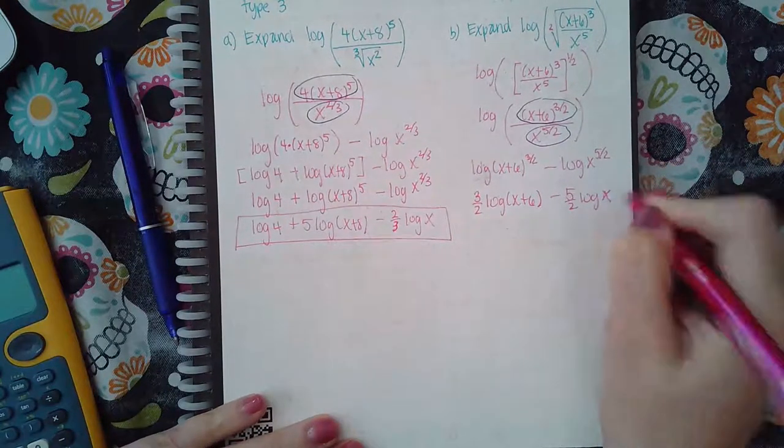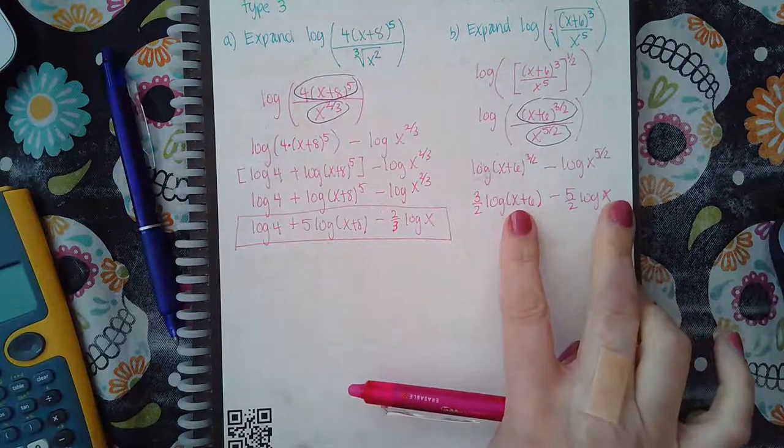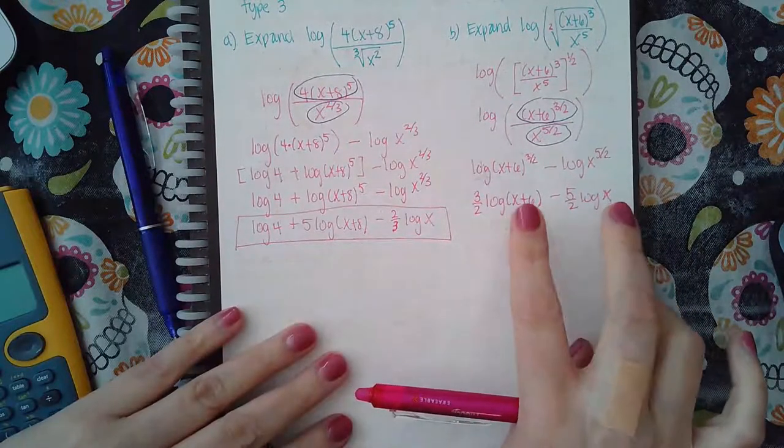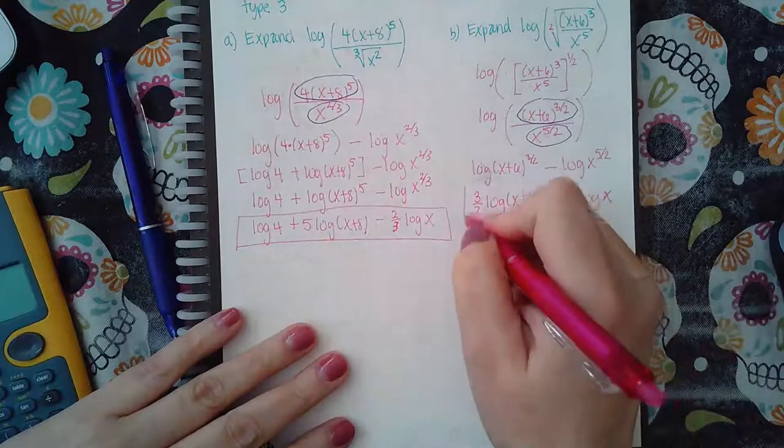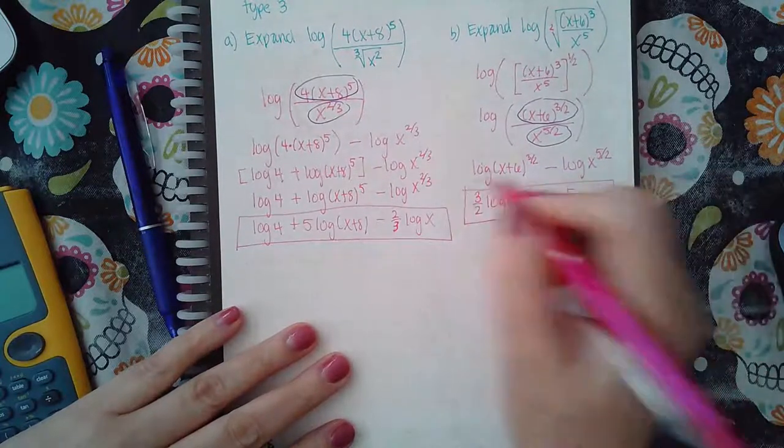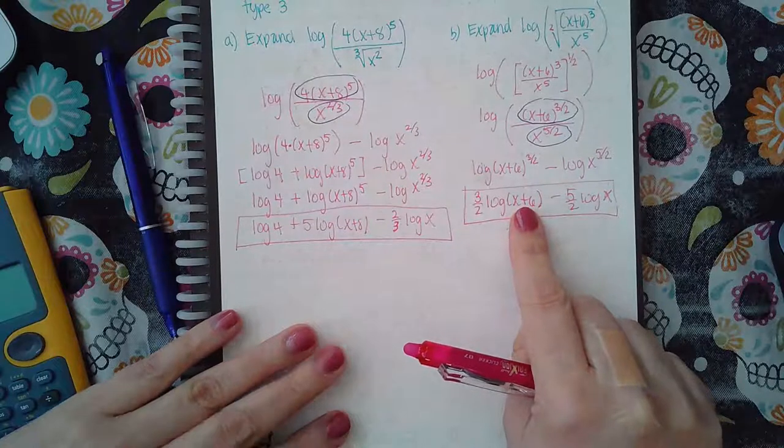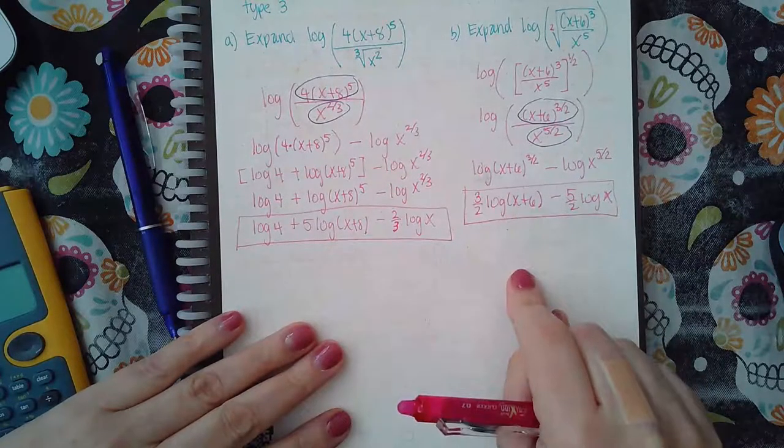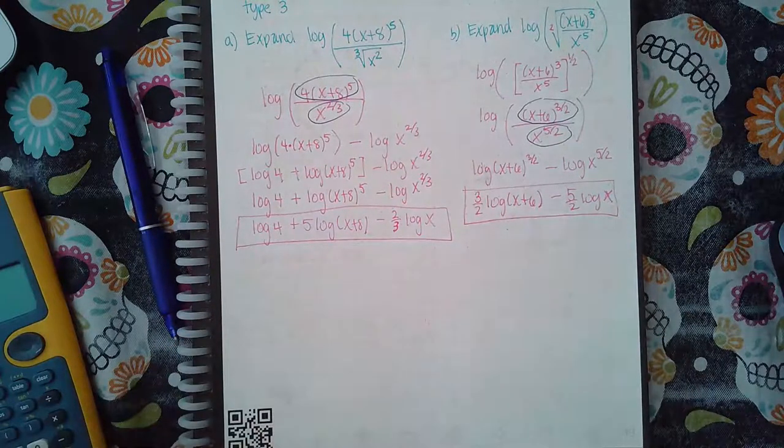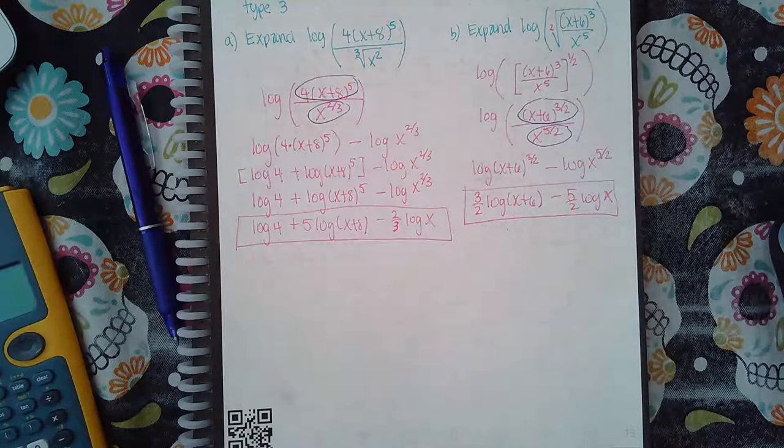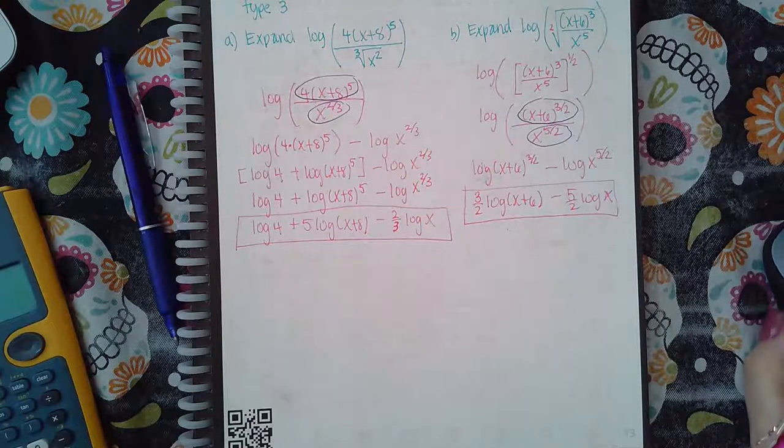And now you'll notice that my arguments don't have any quotients, don't have any products, and don't have any powers, so I am finished with this. And again just like the other problem do not try to break this up. There's no property, no rule that allows you to do so. If you try to you're making up stuff and that will get counted wrong. That's it for this section.